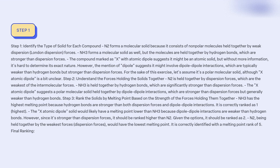Step 3: Rank the solids by melting point based on the strength of the forces holding them together. NH3 has the highest melting point because hydrogen bonds are stronger than both dispersion forces and dipole-dipole interactions — it is correctly ranked as 1 (highest). The X atomic dipole solid would likely have a melting point lower than NH3 because dipole-dipole interactions are weaker than hydrogen bonds. However, since it's stronger than dispersion forces, it should be ranked higher than N2.